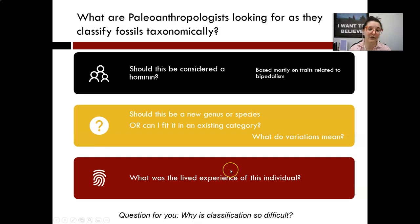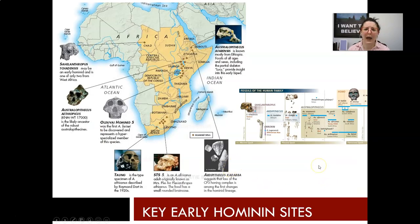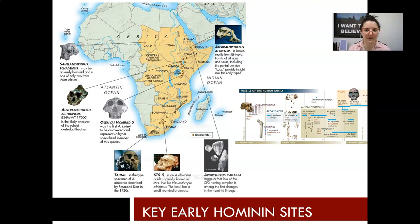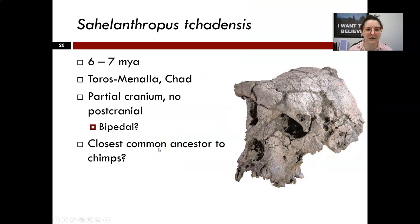When we look at primate evolution, specifically the evolution of apes or hominoids, the fossil record is predominantly found in Africa. That's why we've looked for the hominin fossil record in Africa, and this hypothesis has held up — we do have an African origin. This map shows the distribution of some of these early hominins that we're going to be looking at in this class.